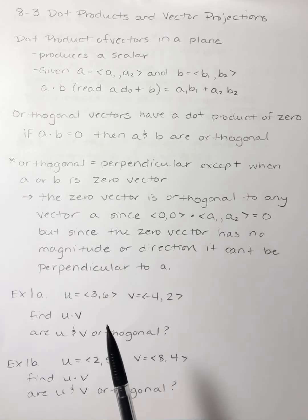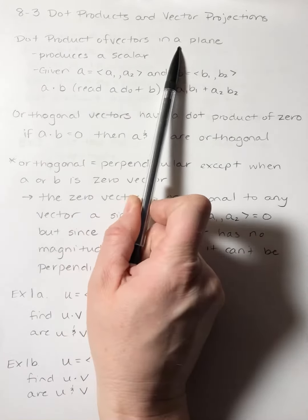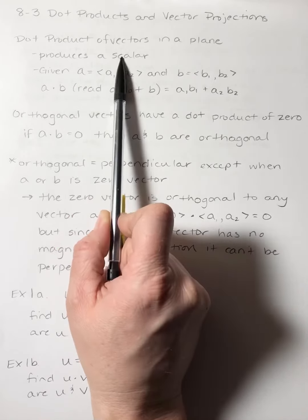Section 8.3 is on dot products and vector projections. A dot product of vectors in a plane produces a scalar.